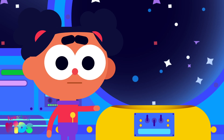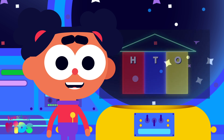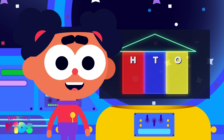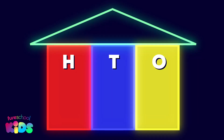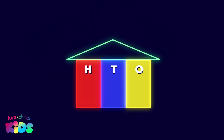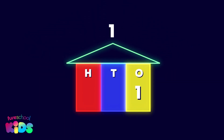Hey everybody, I'm Ava. We are at the place value houses to learn about the number bonds, or pairs, that make 100. Watch what happens with the number pair zero and ten — we move the digits one place to the left.